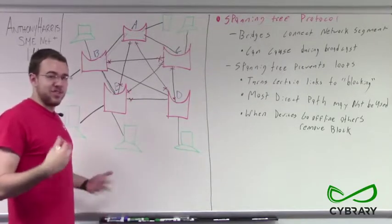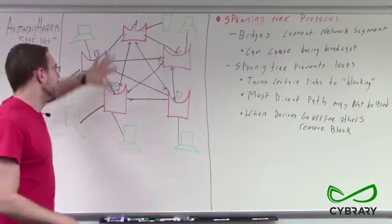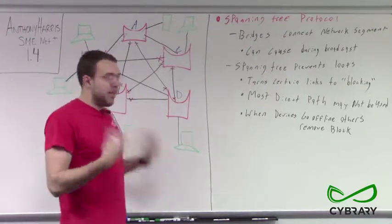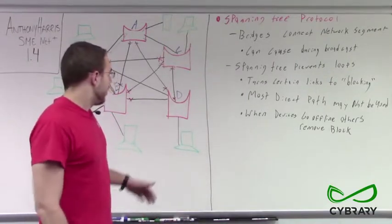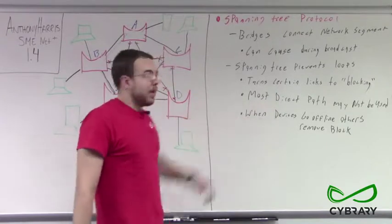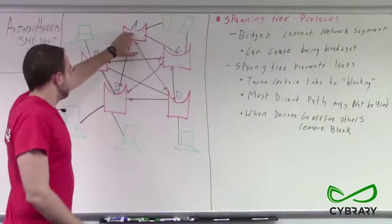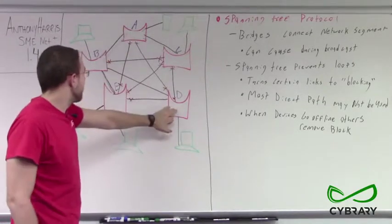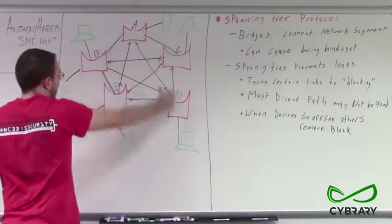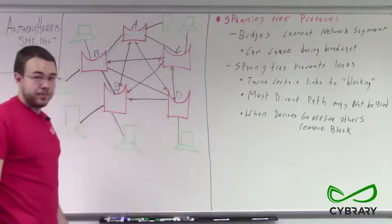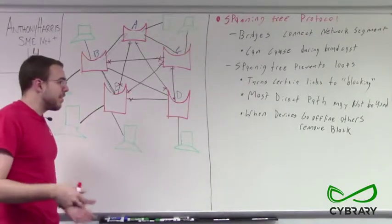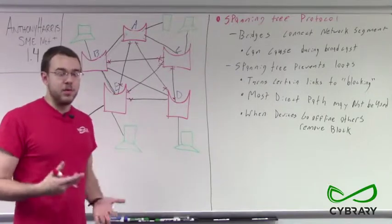We're essentially trying to block links to block off loops. The upside is we've prevented our network from going down because of loops. The downside is our most direct path to certain parts of our network may not be available. So if A needs to send a packet to D, A can no longer send directly to D because that would create an A-D-B loop. A has to send to B who then sends to D — we're eliminating some direct paths, which may cause a little slowness, but it's better than our network going down.